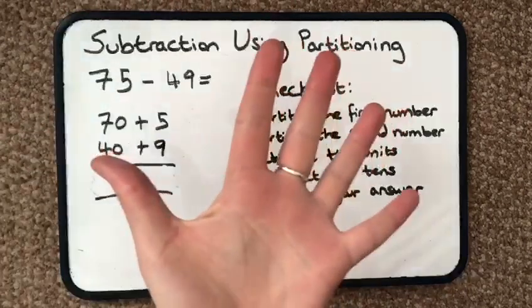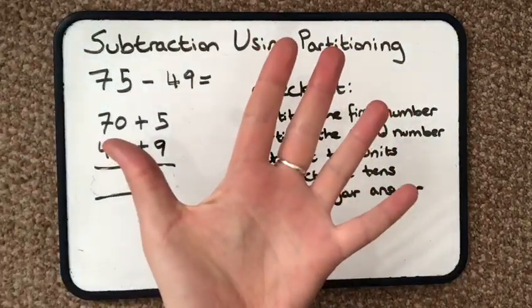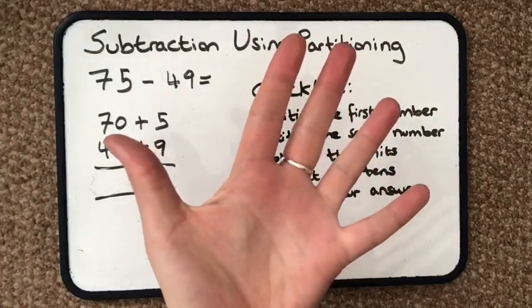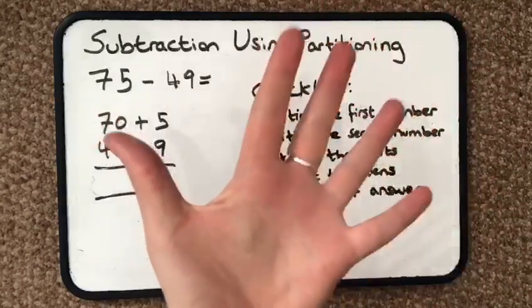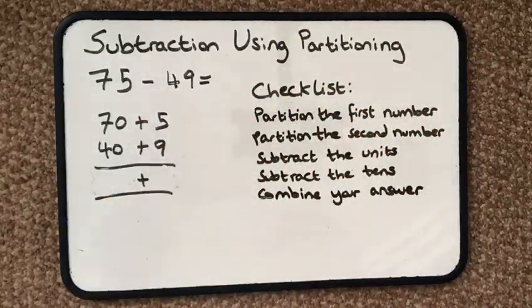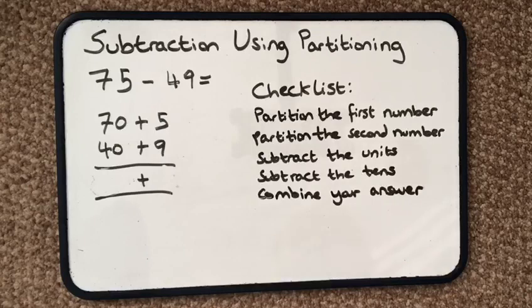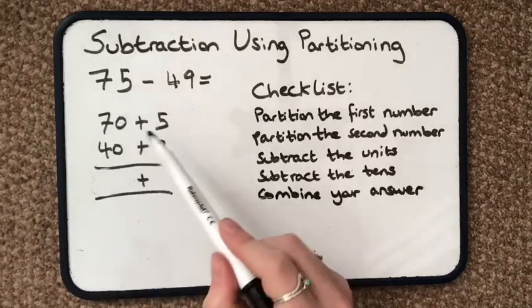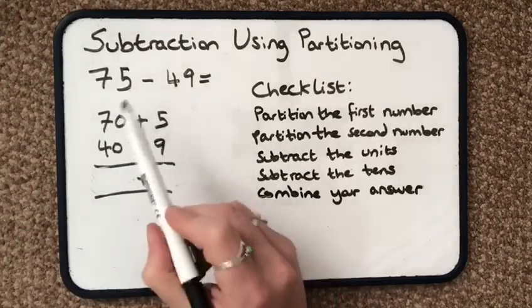Now imagine I've got 5 fingers. Can I take away 9 fingers? No, I haven't got enough. So I'm going to need to do something else. I can't just do 9 take away 5, it doesn't work that way. So we're going to borrow a 10 or transfer a 10 over so that we can use it to solve this.